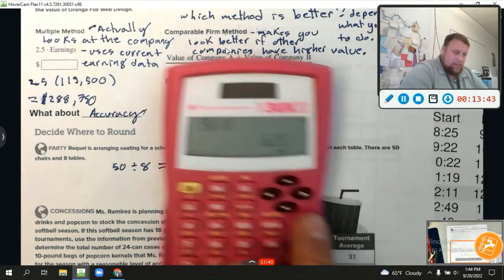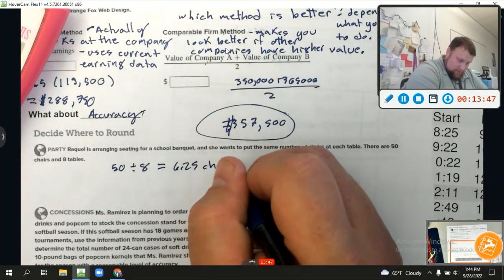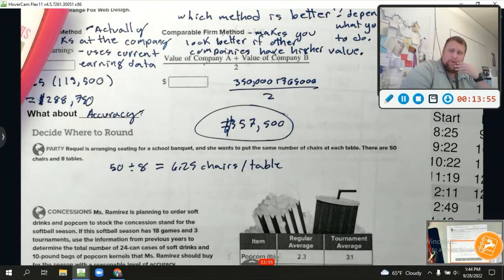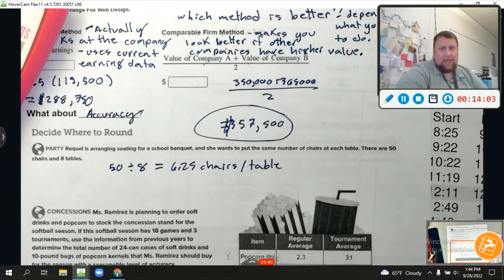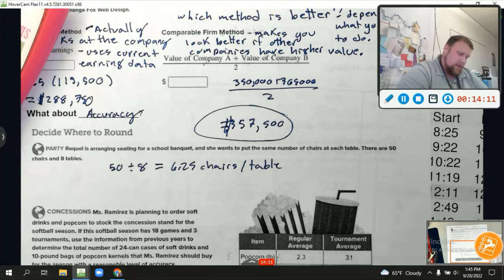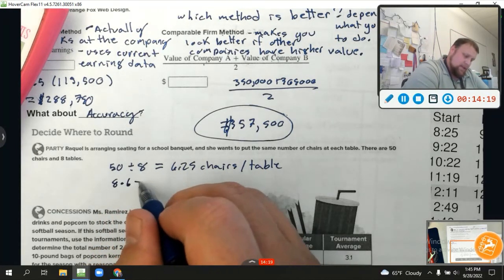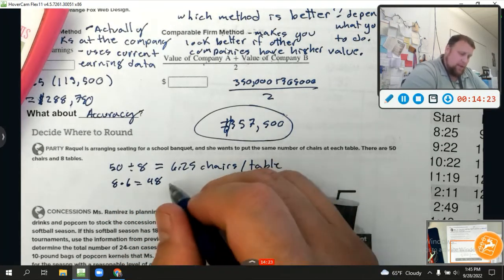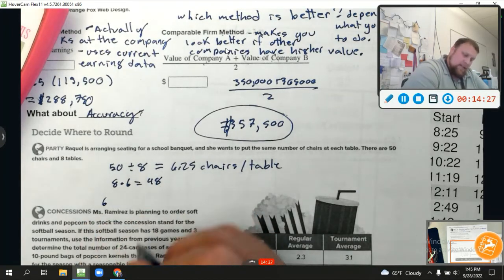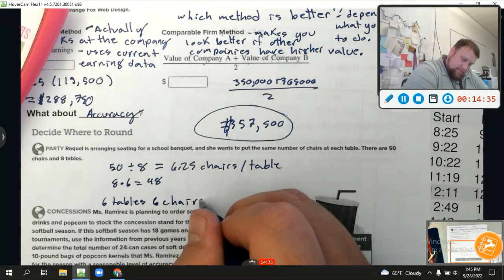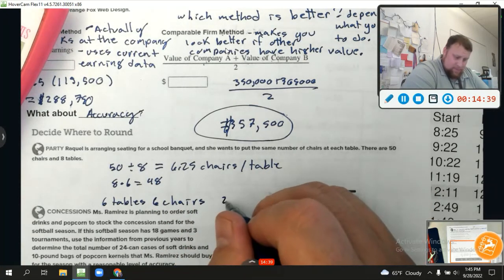So that would just leave two left over. So here's what that tells me. At six of the tables, I'm going to put six chairs. At two tables, I'm going to put seven chairs. Seven chairs. Let's see if that math works out. I'm going to have six times six plus two times seven. So that's 36 plus 14, which, guess what? Equals 50. Boom. That's what we wanted. So this, I think, would get them as even as possible with just a couple of the tables having one extra chair each. Boom.